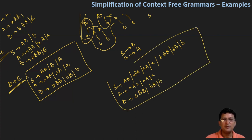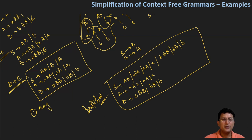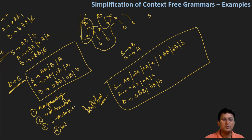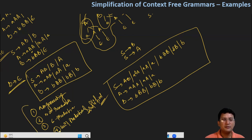So this is the simplified version of the given problem. To summarize the steps we followed: first we removed useless productions — those that are non-generating — then we removed non-reachable symbols. This is the second step. Then in the third step we removed epsilon productions, and in the fourth step we removed unit productions. So these are the four steps you should remember for the simplification of the grammar.